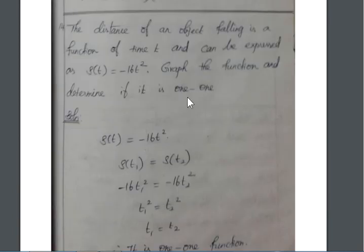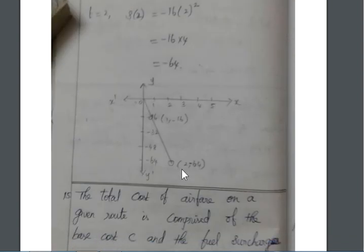And then, next, graph the function. So, we assign the value 0, 1, 2, 3. Distance also cannot be negative. So, 0, 1, 2. We apply the values in this function. Now get down the diagram. So, this one is falling downward.